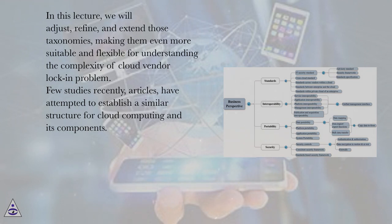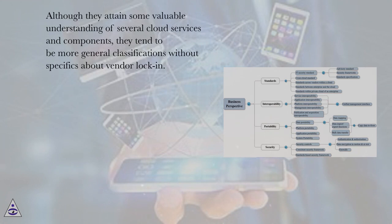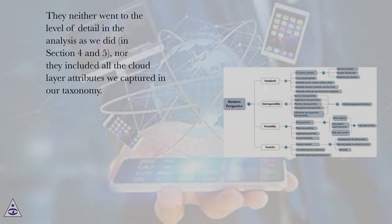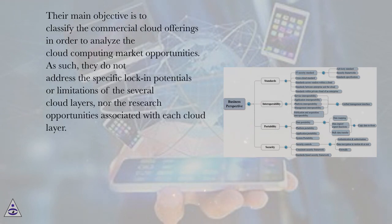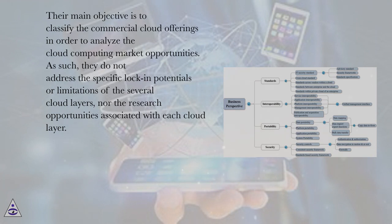A few recent studies and articles have attempted to establish a similar structure for cloud computing and its components. Although they attain some valuable understanding of several cloud services and components, they tend to be more general classifications without specifics about vendor lock-in. They neither went to the level of detail in the analysis as we did in sections 4 and 5, nor did they include all the cloud layer attributes we captured in our taxonomy.